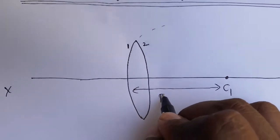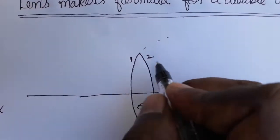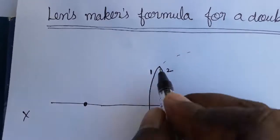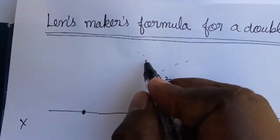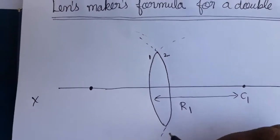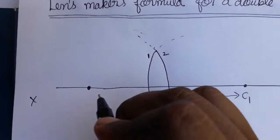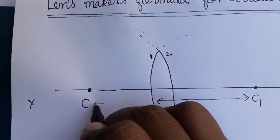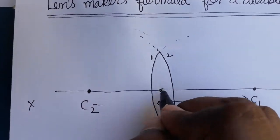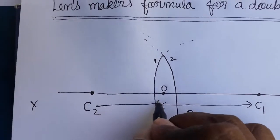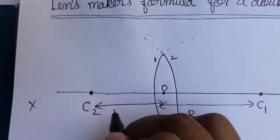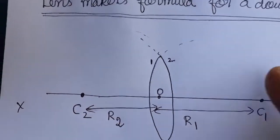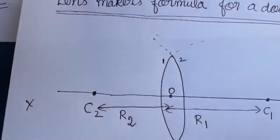The second surface has its center of curvature C2, which comes on the left side. The radius from the center for the second surface is R2. So R1 is for the first surface and R2 is for the second surface.